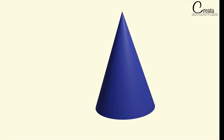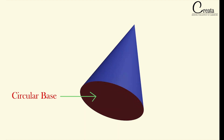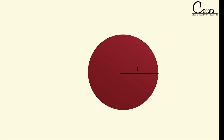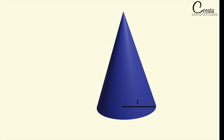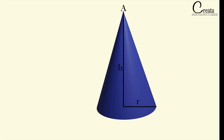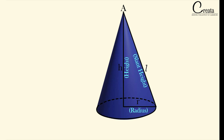This is a right circular cone. It has a circular base — the base of a cone is a circle. Let's assume the radius of the circle as r. The topmost point of the cone is the vertex, let's call it A. The height of the cone is the line joining the center of the base — the center of the circle — with the topmost vertex. This is the height h, this is the radius r, and this slant portion is known as slant height, denoted by L.